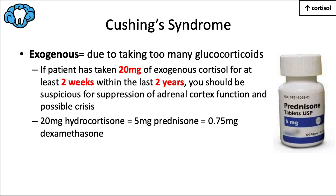Cushing's syndrome can also be caused by an exogenous source — taking too many chronic glucocorticoids like prednisone for asthma, rheumatoid arthritis, lupus, eczema, inflammatory bowel disease, ulcerative colitis, or other autoimmune diseases. This is the most common form and is called cushingoid. Long-term corticosteroid use can cause the adrenal glands to stop producing cortisol naturally, creating a vulnerable state of adrenal cortex suppression if the patient stops taking corticosteroids.